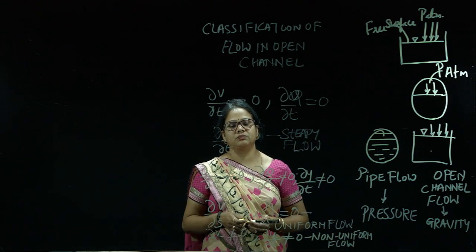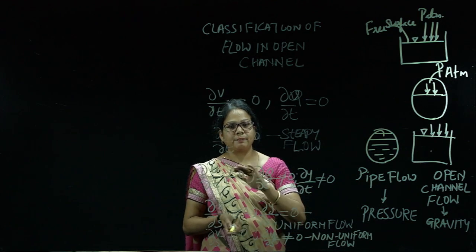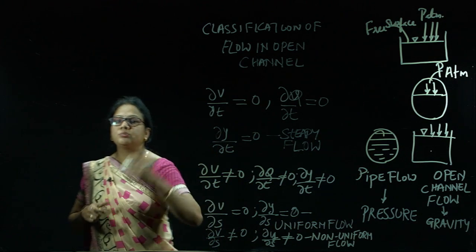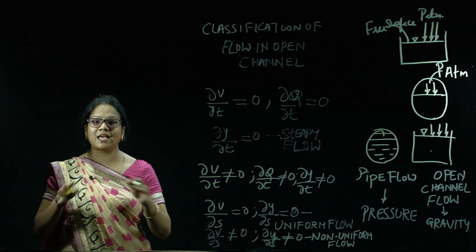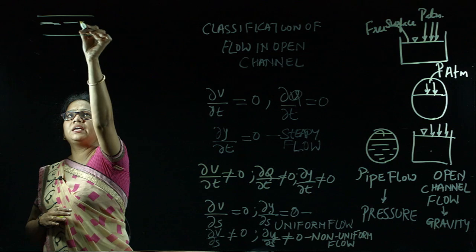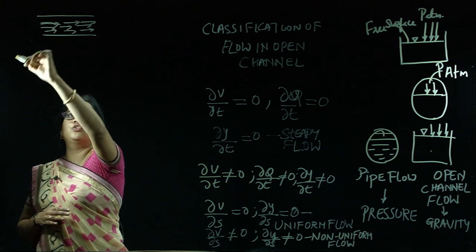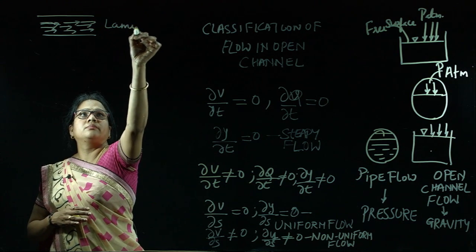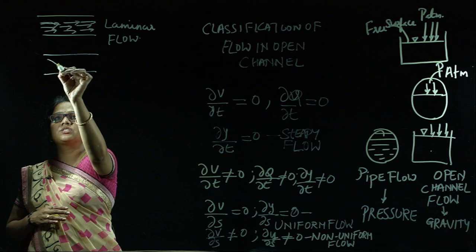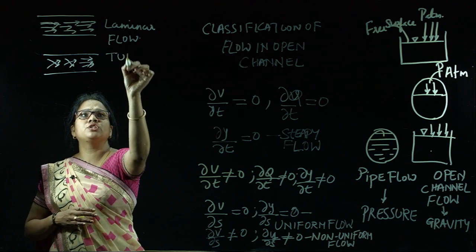The third type is laminar and turbulent flow. Laminar flow is a flow in which fluid particles move in a straight path, parallel to each other. In turbulent flow, the fluid particles do not flow in a straight path — they move in a zigzag manner, crossing each other and not following a single path.